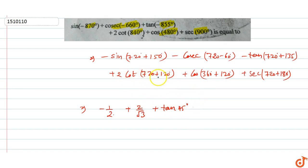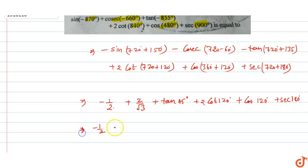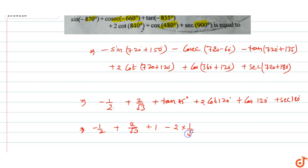For 2cot(120°): since 120° = 180° - 60°, cot(120°) = -cot(60°) = -1/√3, so 2cot(120°) = -2/√3. Plus cos(120°) = -1/2. And sec(180°) = -1.